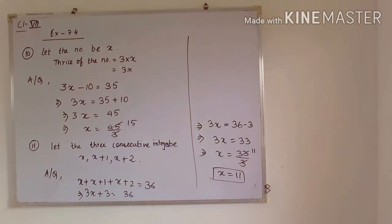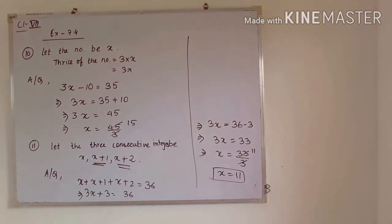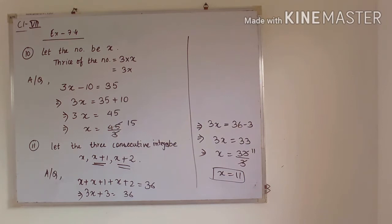So what are these integers? The first number will be 11, then 11 plus 1 will be 12, then 11 plus 2 will be 13. So 11, 12, 13 are the 3 consecutive integers, and the sum of these 3 integers will be equal to 36.